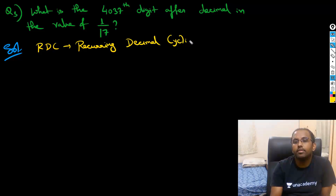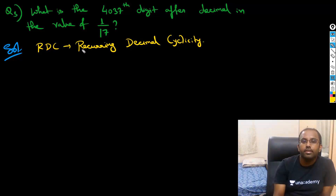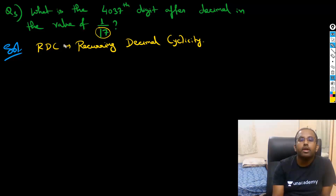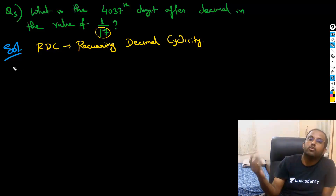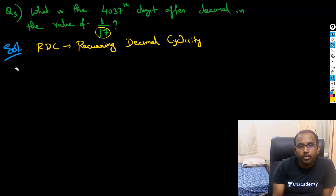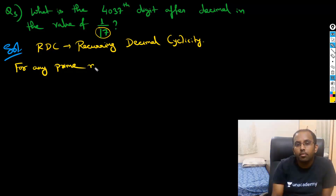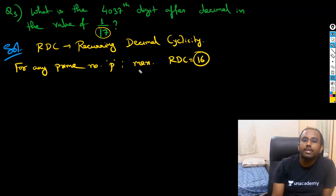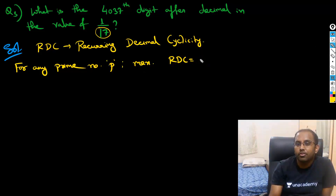So what happens in this RDC — Recurring Decimal Cyclicity? For any prime number P, its maximum RDC is P minus 1, which equals 16. So for 17, that is 17 minus 1 equals 16. That means after 16 digits, it repeats all the values.